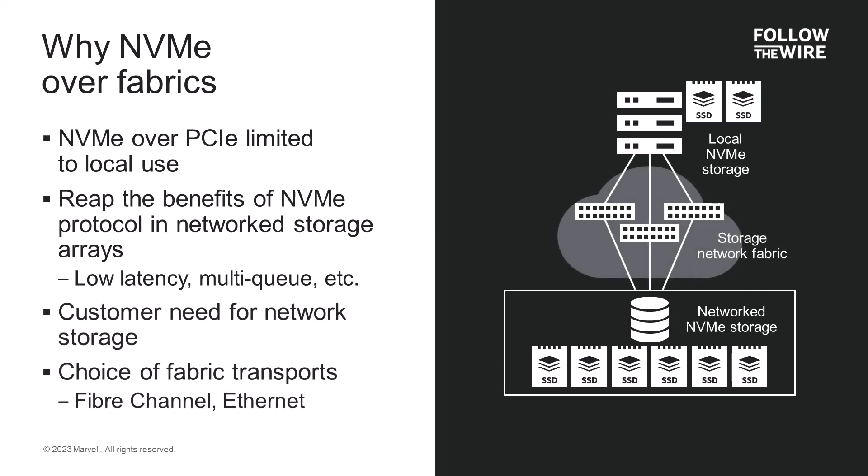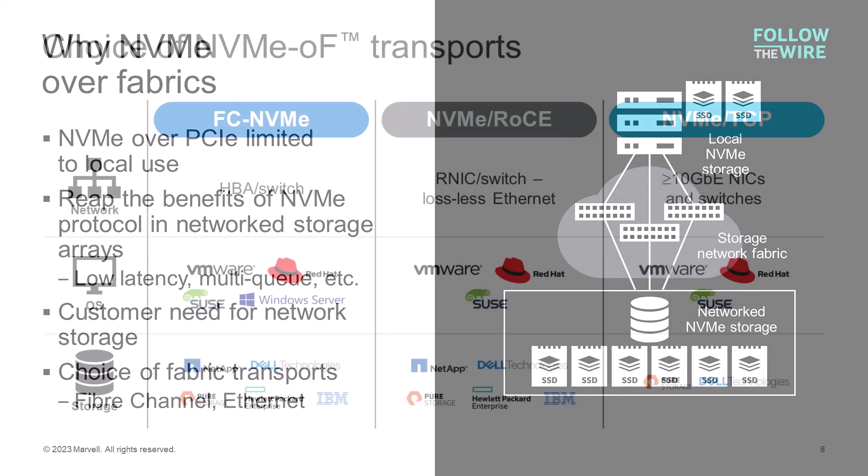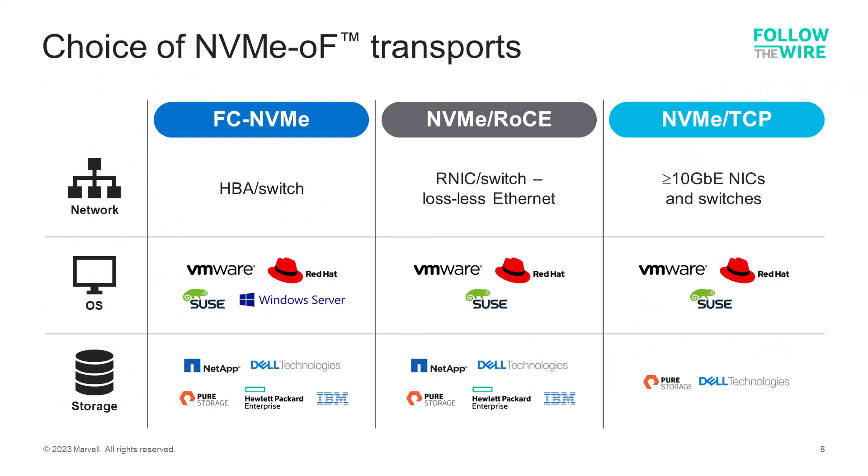Customers want to obtain the performance advantages of NVMe SSD storage and share that high performance across a network. This can be achieved by transferring or encapsulating the NVMe protocol across storage fabrics. Typical choices can be either an ethernet fabric or a fiber channel SAN fabric. There are three primary choices for NVMe over fabric transports.